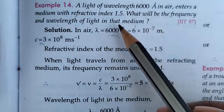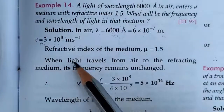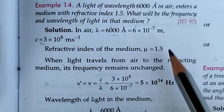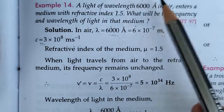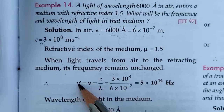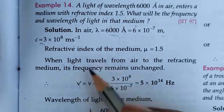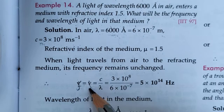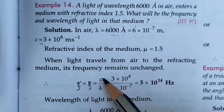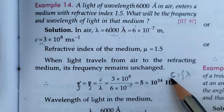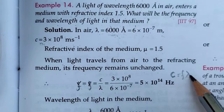When light travels from air to a refractive medium, its frequency remains unchanged. So the frequency of light in the medium F dash equals frequency in air F. The formula of frequency: F equals c by lambda, because c equals F times lambda.